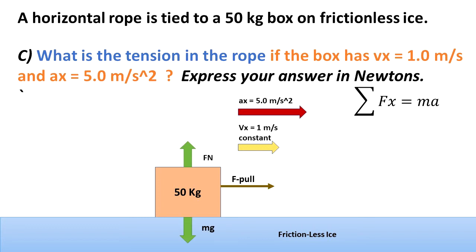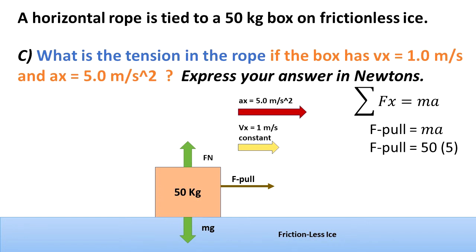Remember, the only forces that could affect the velocity in the x direction are the x forces, and the only force in the x direction is f-pull due to the rope because the ice is frictionless. So the summation of the forces in the x direction is equal to mass times acceleration — there is an unbalanced force, f-pull, causing that acceleration. Therefore f-pull equals mass times acceleration: 50 kilograms times 5 meters per second squared, giving a tension in the rope of 250 Newtons.